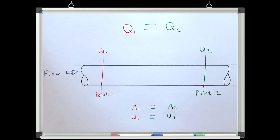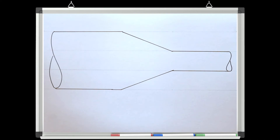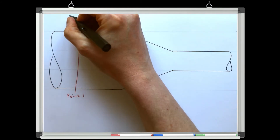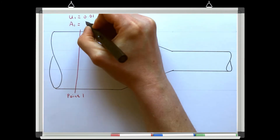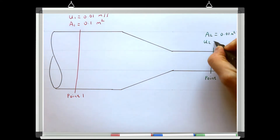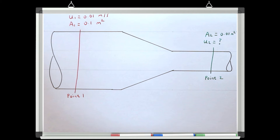But we can also think of a scenario where this is not the case. For example, if we decrease the diameter of the pipe at point two, what now happens to the flow? In this example, let's say at point one the area is 0.1 metres squared and the velocity is 0.01 metres per second, and at point two the area has decreased to 0.01 metres squared. Can we work out the discharge and the new velocity at point two?